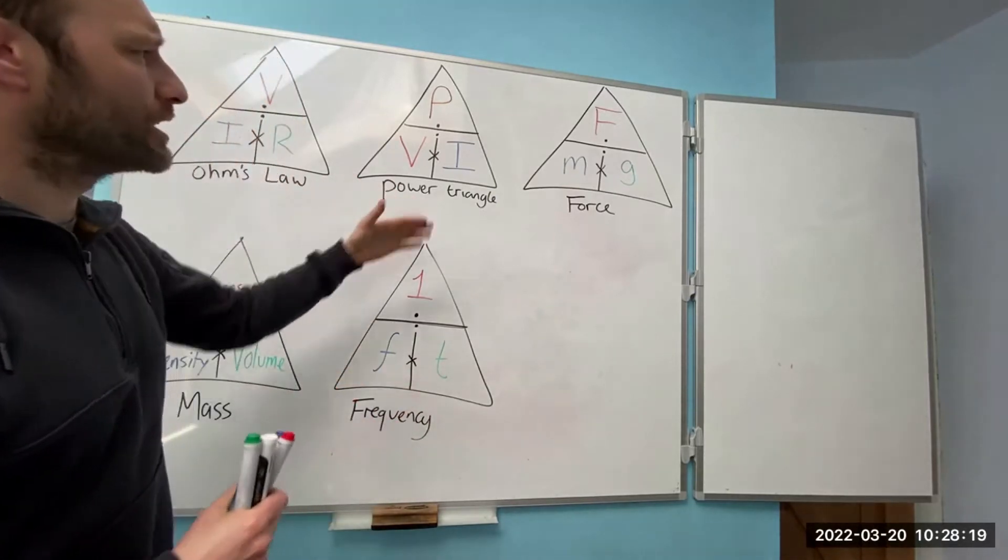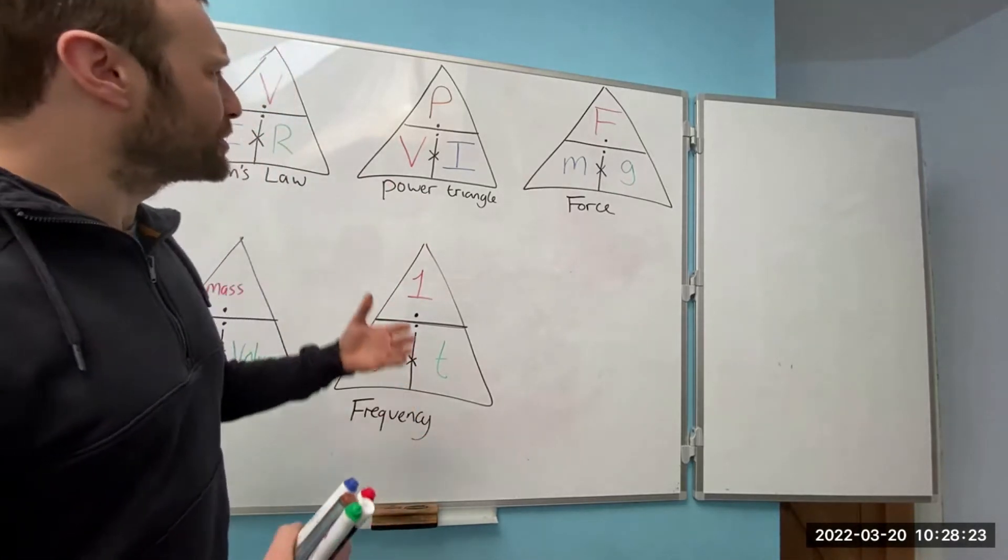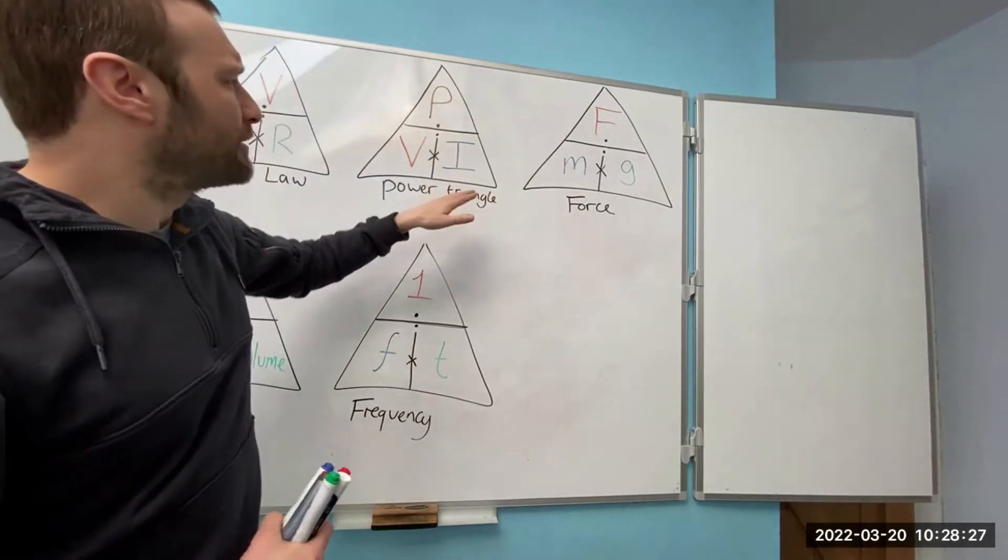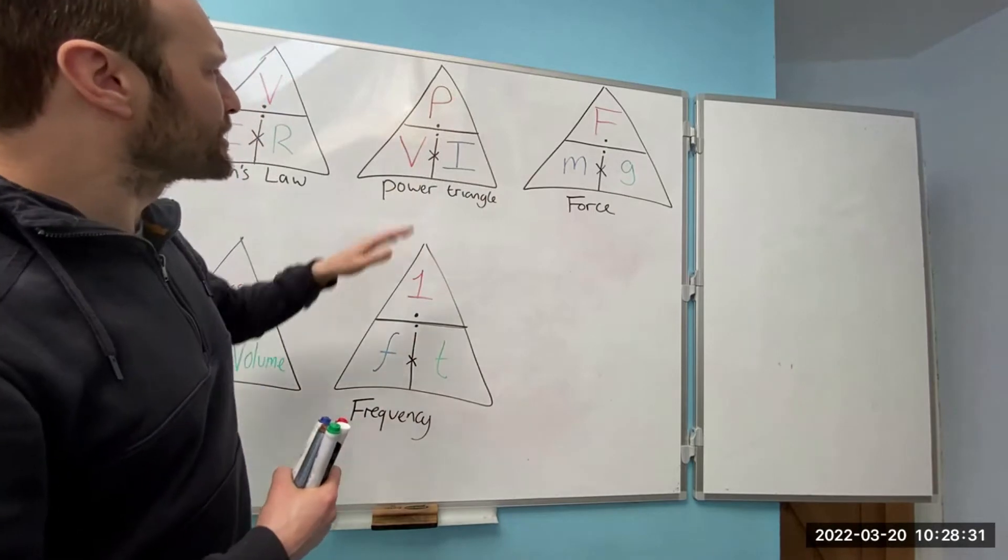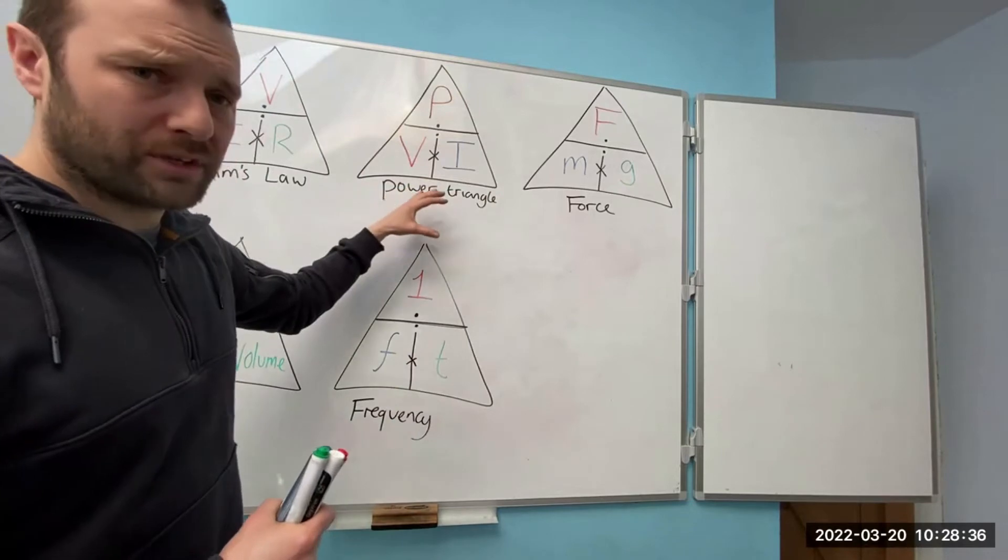Next is the power triangle, which should be a favorite by now. Exactly the same principle. If I want to find power, that's volts times current. If I want to find current, that's power divided by voltage. And if I want to find voltage, that's power divided by current. That's your power triangle.